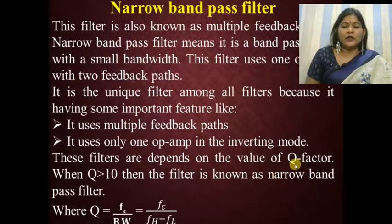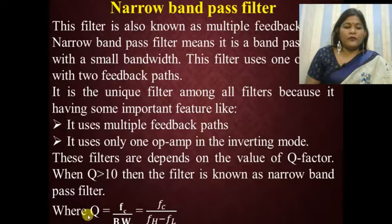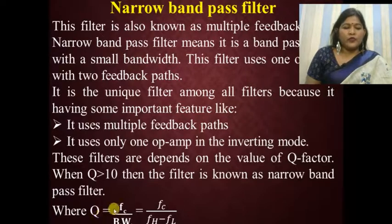The Q factor is the quality factor, also known as the figure of merit. When Q is greater than 10, the filter is known as a narrowband pass filter. Q is calculated as Q = FC / bandwidth, where bandwidth equals FH minus FL. The quality factor is an important parameter in band pass filter design.